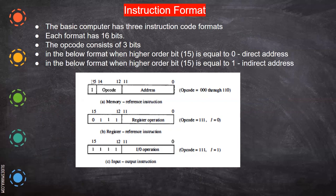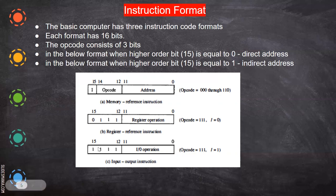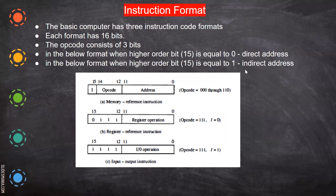The basic computer has three instruction code formats. In the first format, bits 0 to 11 are the address, bits 12 to 14 are three bits for the opcode, and the last bit (bit 15) indicates whether the address is direct or indirect. The opcode runs from 000 to 110. If bit 15 is zero, it is a direct address; if bit 15 is one, it is an indirect address.